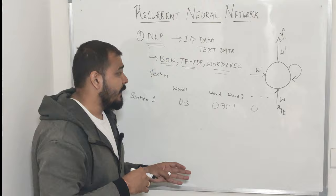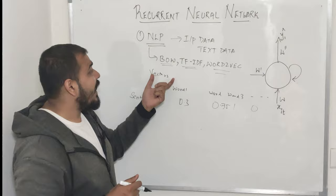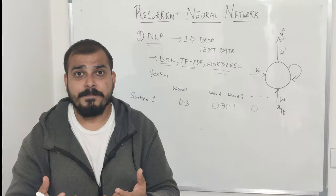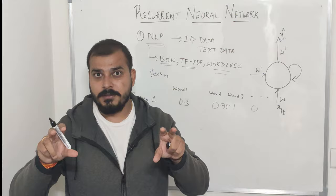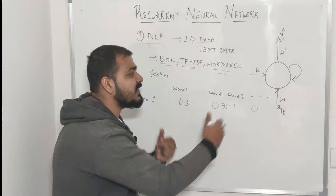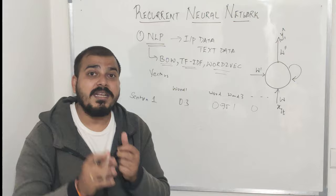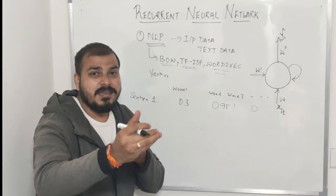One very important thing to understand: from these text pre-processing techniques - bag of words, TF-IDF, and word2vec - the sequence information is discarded. What do I mean by sequence information? Suppose I say 'my name is Krishna' - I'm saying it in some sequence and that sentence makes some sense. When converting this into vectors, that sequence information gets discarded. Once the sequence information is discarded, your accuracy may deflect towards the lower side.